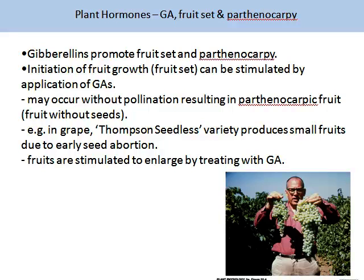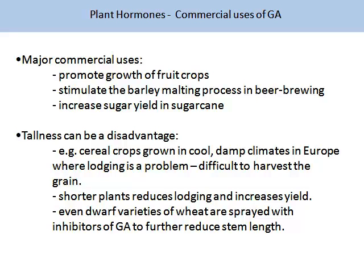Gibberellins promote fruit set and parthenocarpy. Initiation of fruit growth can be stimulated by the application of GAs. This may occur without pollination, resulting in parthenocarpic fruit — fruit without seeds. This is how the variety Thompson Seedless is produced. Fruits are stimulated to enlarge by treating with GA, and you can see the difference on the slide between a bunch of grapes treated with GA and one that has not. Major commercial uses include promoting growth of fruit crops, stimulating the barley malting process in beer brewing, and increasing sugar yield in sugar cane.